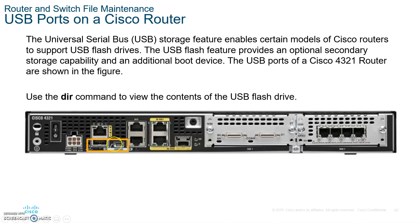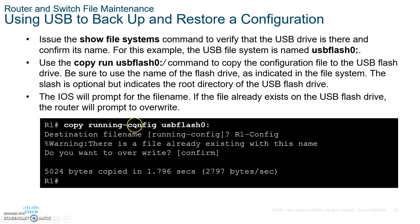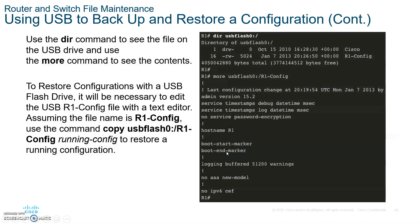You can also save to a USB drive using the command copy running-config usbflash0. If your router has a USB port, stick a flash drive in and type that command, then hit enter. Afterwards, type dir usbflash0 to list and verify that the config file has been copied successfully.